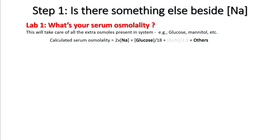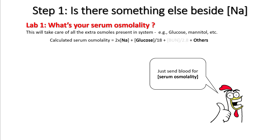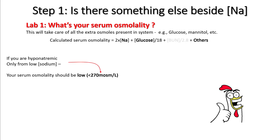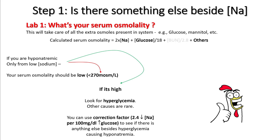There are five steps to diagnose hyponatremia. The first step is to ask yourself: is there something else beside sodium that's causing your hyponatremia? For this, just send a serum osmolality. If you're hyponatremic only from low sodium, your serum osmolality will be low — less than 270 milliosmol per liter. However, if there are other osmols present like glucose, serum osmolality will be high. You can use the correction factor to see if there's anything else beside hyperglycemia causing hyponatremia.